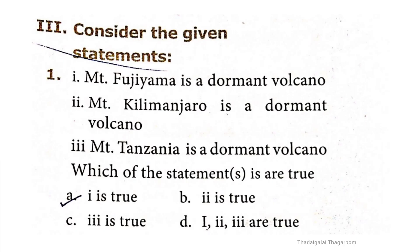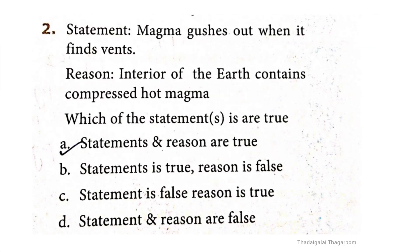Roman numeral three: Consider the given statements. First: Mount Fujiyama is a dormant volcano. Second: Mount Kilimanjaro is a dormant volcano. Third: Mount Tanzania is a dormant volcano. Which of the statements are true? The correct option is option A. Assertion: magma gushes out when it finds vents. Reason: interior of the earth contains compressed hot magma. Both statement and reason are true. The correct option is option A.